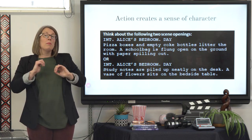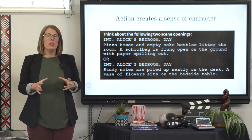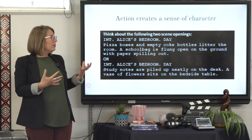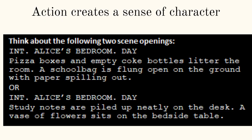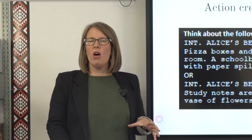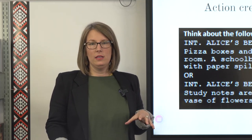It's really important and valuable that in your action lines you can create a sense of a character so that the people who perform these characters get a feeling of what kind of personality they have. Here I've got two examples, and both take place interior in Alice's bedroom during the daytime — that's all the information we need in our slug line. The first action gives you a very different sense of character to the second. Your action is an opportunity to introduce characters and give us an idea of what kind of behaviour and personality to expect, but it's not an opportunity to complete an entire character profile. That should come through in their dialogue, their behaviour, and their actions in the story.